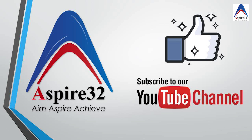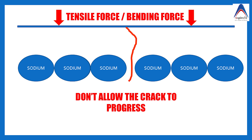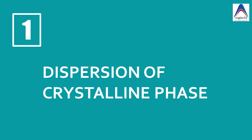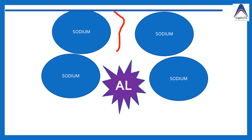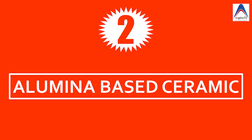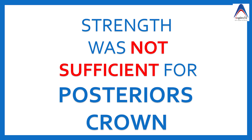The third major technique is interruption of crack propagation, which does not stop cracks from opening but stops them from propagating into the deeper portions of the ceramic, reducing the chances of fracture. This can be done by two methods. The first is dispersion of crystalline phase, where alumina is added — alumina stops crack propagation because the crack cannot penetrate the strong alumina particles. This led to the new category of aluminous porcelain, which is sufficient for anterior teeth where forces are lower, though the alumina particles make the crown slightly more opaque than feldspathic porcelain.